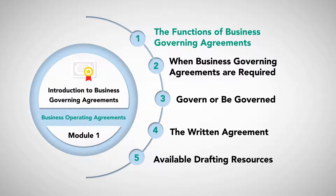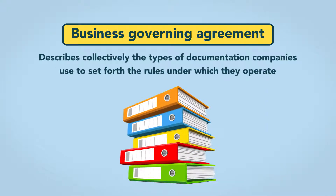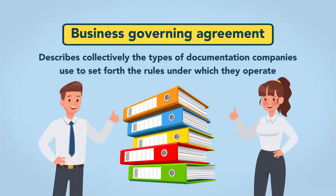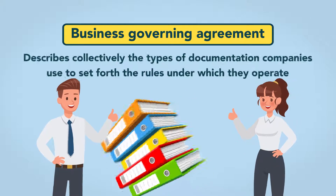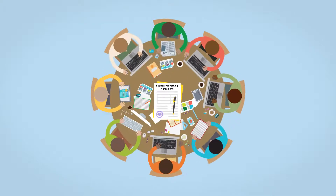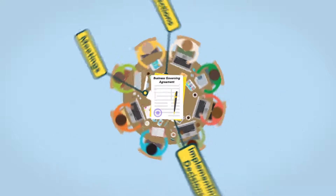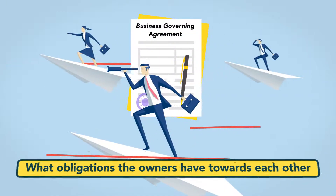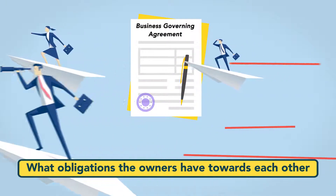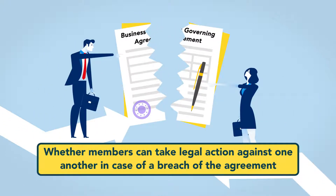The functions of business governing agreements. The term business governing agreement describes collectively the types of documentation companies use to set forth the rules under which they operate. In addition to establishing the organization's rules, these agreements lay out procedures for matters including elections, meetings, and implementing decisions. A governing agreement can also identify what obligations the owners have towards each other, and whether members can take legal action against one another in case of breach of the agreement.